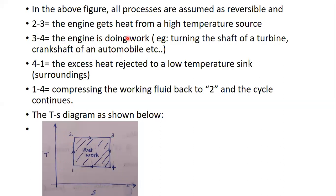Process 3-4 is our work expenditure, where the engine does work. In thermodynamics, work expenditure is assumed to be an adiabatic process — carried out without any heat loss. Since all processes are reversible, a reversible adiabatic process is nothing but an isentropic process. That is why 3-4 is a vertical line on the TS diagram.